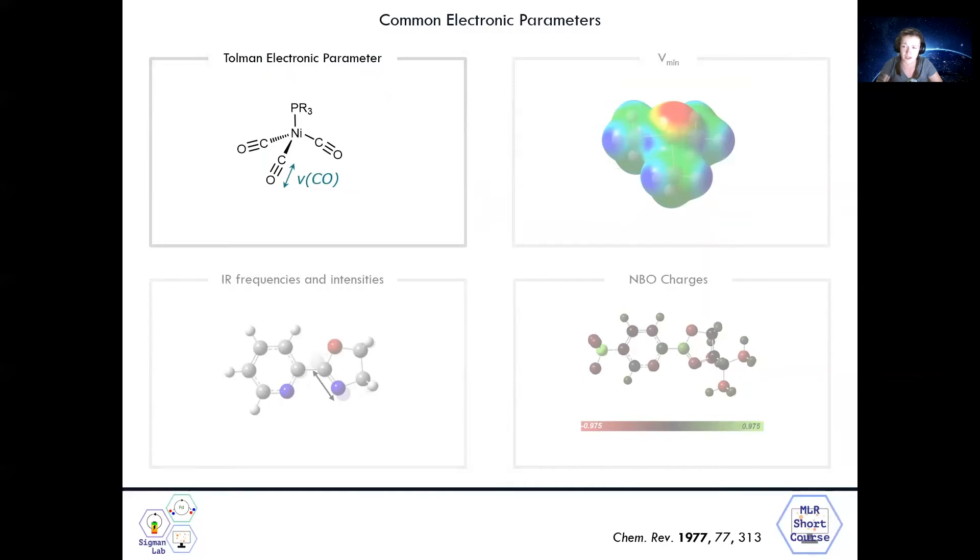The field of computational chemistry has, of course, enabled us to compute the electronic structure of molecules to extract computed properties rather than relying on experimentally measured properties. One such example is molecular electrostatic potential. Of particular interest is the minimum electrostatic potential, also called Vmin. Shown here is an electrostatic potential map of trimethylphosphine. The minimum electrostatic potential in the phosphorous lone pair region on phosphine ligands has been shown to correlate with the classical Tolman electronic parameter, and thus Vmin serves as an easily computable measure for the overall ligand electronics.